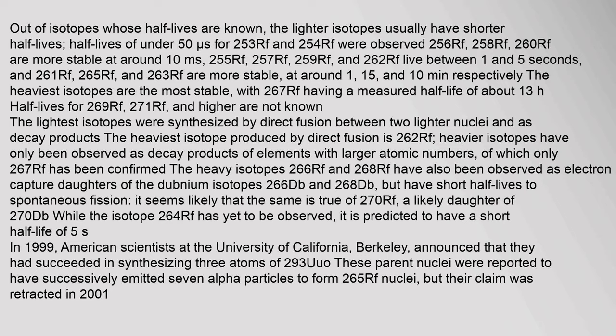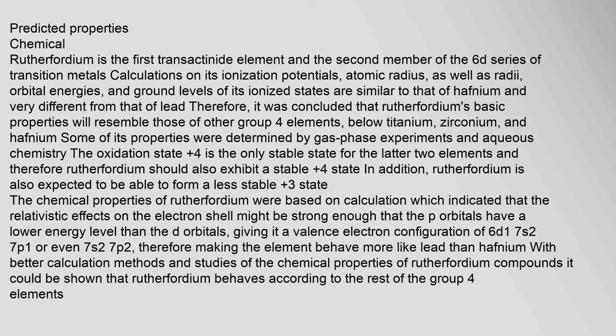Rutherfordium is the first transactinide element and the second member of the 6d series of transition metals. Calculations on its ionization potentials, atomic radius, orbital radii, orbital energies, and ground levels of its ionized states are similar to that of hafnium and very different from that of lead. Therefore, it was concluded that rutherfordium's basic properties will resemble those of other group 4 elements — below titanium, zirconium, and hafnium. Some of its properties were determined by gas phase experiments and aqueous chemistry.